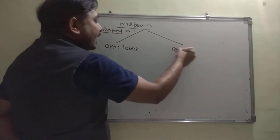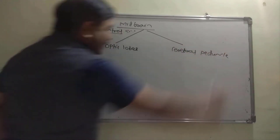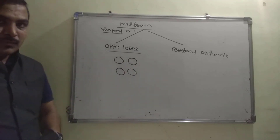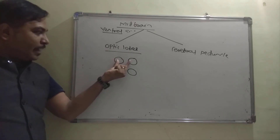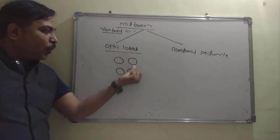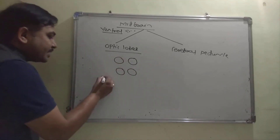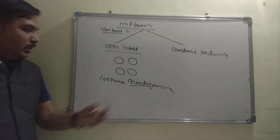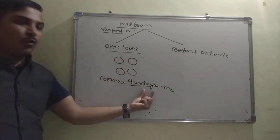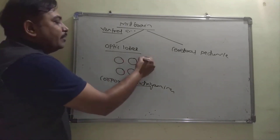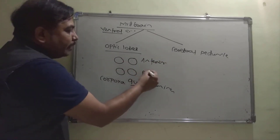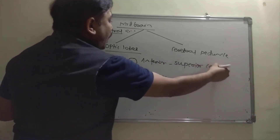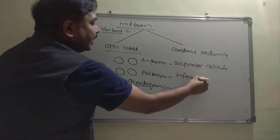The optic lobes are small, rounded, and occur in two pairs — so there are four optic lobes total. Because of this, they are also called corpora quadrigemina (quadri = four). The upper pair is the anterior optic lobes, called superior colliculi, and the lower pair are the posterior optic lobes, called inferior colliculi.